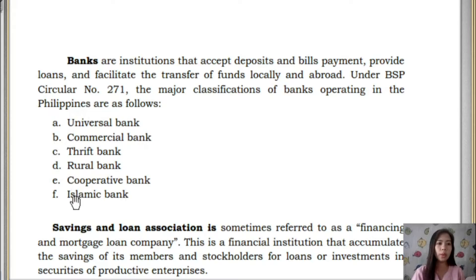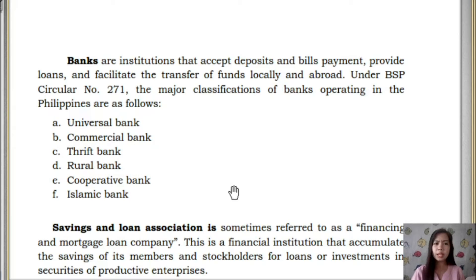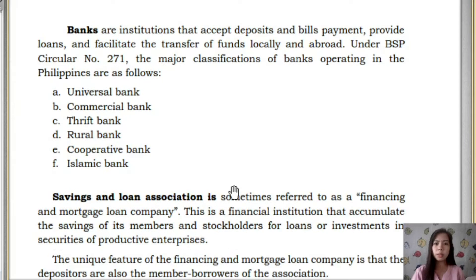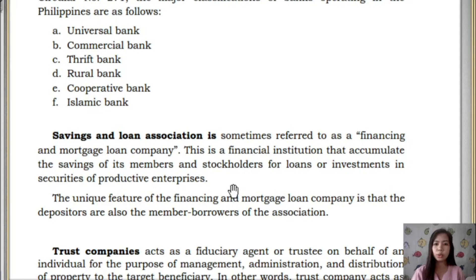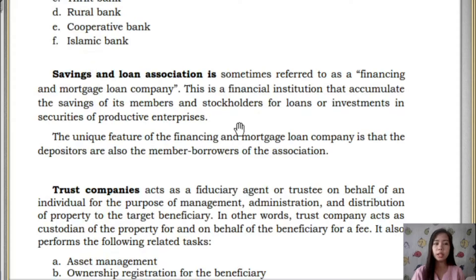The major classifications of banks in the Philippines are: Universal, Commercial, Thrift, Rural, Cooperative, and Islamic. Next, under Depository Institution, we have the Savings and Loan Association, also referred to as a Financing and Mortgage Loan Company.